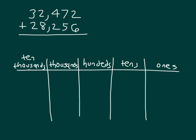Here we have another problem, 32,472 plus 28,256. Let's draw that tape diagram. The first addend there, 32,472, is actually just a little bit larger than 28,000. So we'll draw our tape diagram accordingly and label each of those numbers.